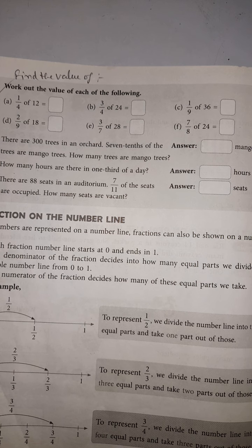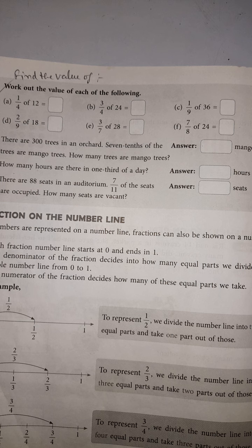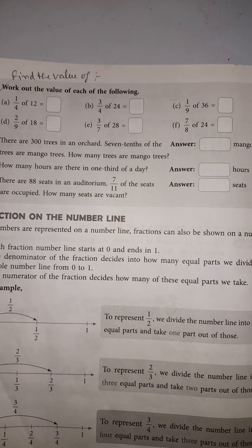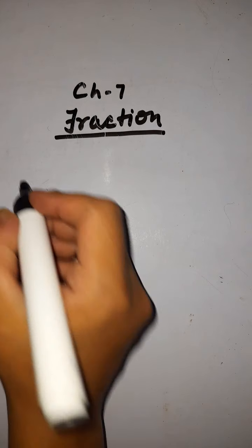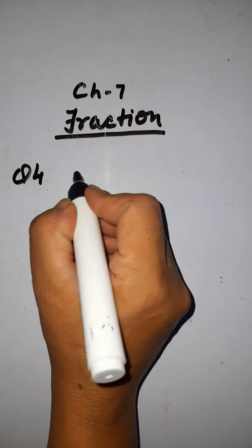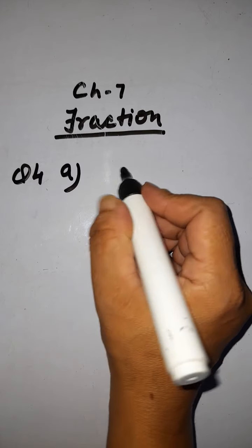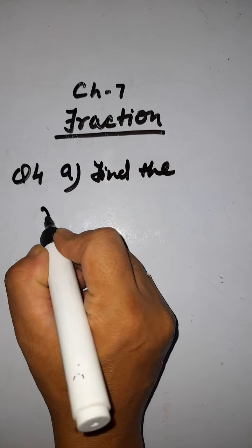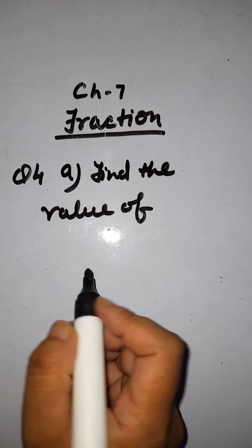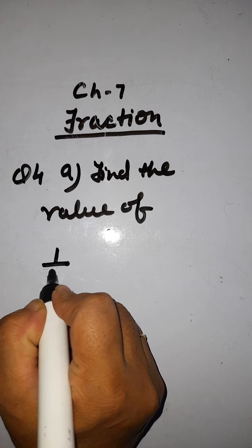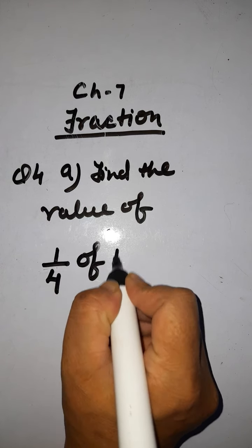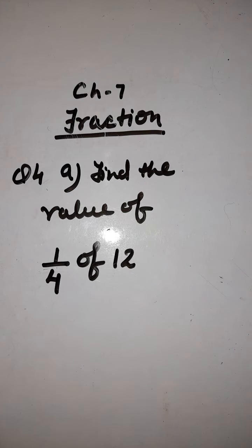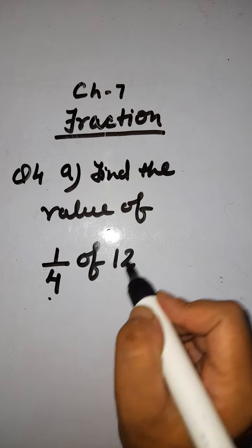Find the value of each of the following. Here we have question number 4 part A. So let's solve this question here. The question is: find the value of 1 out of 4 of 12. We have to find out 1 out of 4 of 12.